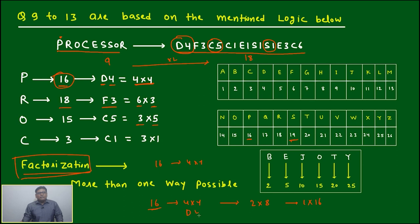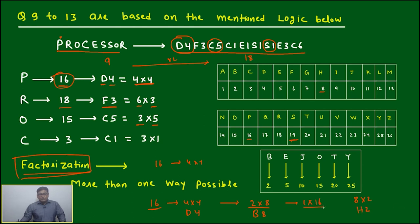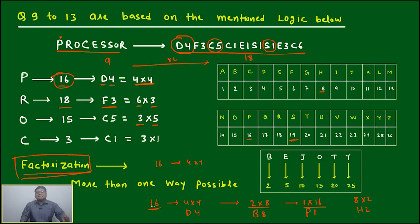If we factorize 16 as 4 into 4, we write D4. If we do 2 into 8, we can write B8, or reversing it, 8 into 2 gives H2. Similarly, 1 into 16 we can write as P1, since only single digits are used as the number. So in how many ways can we factorize? Every factorization can be written in two different ways, except when both factors are equal. One alphabet can be coded in multiple ways, and therefore one word can be coded in multiple ways.